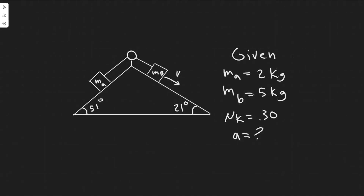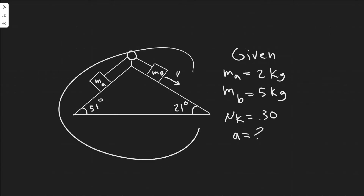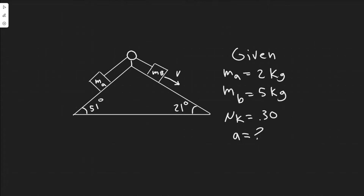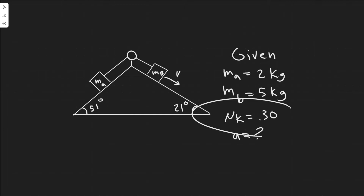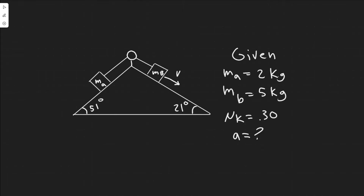In this problem we're told two masses, Ma equals 2 kilograms and Mb equals 5 kilograms, are on inclines and are connected together by a string as shown in the figure. The coefficient of kinetic friction between each mass and its incline is 0.3. If Ma moves up and Mb moves down, determine their acceleration. Write down your givens: mass of Ma, mass of Mb, coefficient of kinetic friction, and A equals question mark.